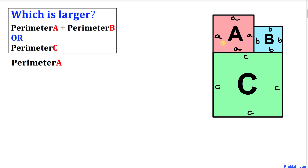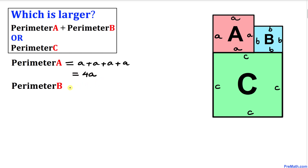Now let's focus on square A and we are interested in its perimeter. The perimeter is simply the sum of all its side lengths — all the boundaries. So adding all four sides: a plus a plus a plus a gives us simply four times a. Likewise, the perimeter of square B is going to be b plus b plus b plus b, giving us four times b.